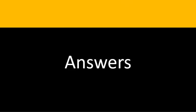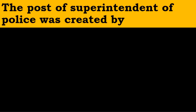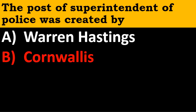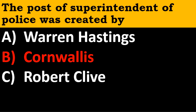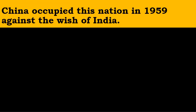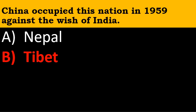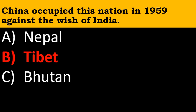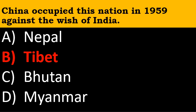Now it is time for answers — you can check your answers with mine. First: The post of Superintendent of Police was created by Cornwallis. Second: China occupied this nation in 1959 against the wish of India — the options were Nepal, Tibet, Bhutan, and Myanmar. The correct answer is Tibet.